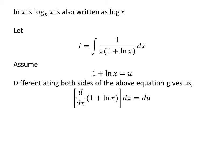Taking differential of both sides gives us derivative of 1 plus natural log of x with respect to x times differential of x is equal to differential of u. We know derivative of constant 1 is 0 and derivative of natural log of x is 1 upon x.